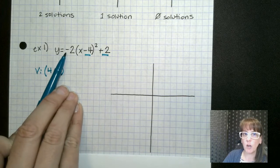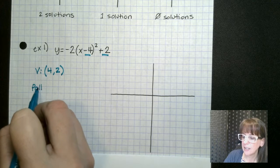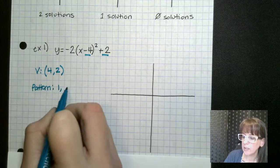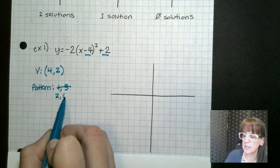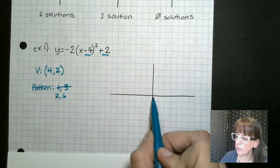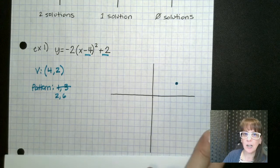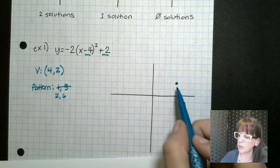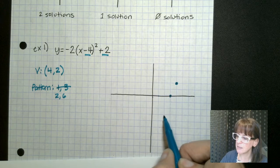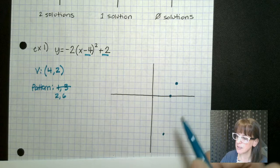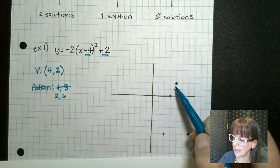So this tells us it's going to be opening down and our pattern is normally one, three, but we're going to be multiplying it by two. So two, six. So we go over four, one, two, three, four, up two. Now it's going to open down. But our pattern is two, six. So we go over one, down two, over one, down six.